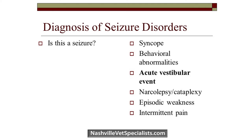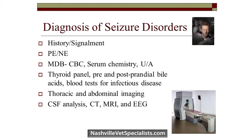When working up a patient with a seizure, at minimum a physical and neurological exam should be performed, along with a minimum database for first-time seizure patients: CBC, chemistry, and urinalysis. Depending on signalment, a thyroid panel, bile acids, and infectious disease titers may be needed. Thyroid testing is done not to identify a seizure cause — thyroid disease itself doesn't cause seizures — but because certain medications can affect thyroid testing and you want to know about other systemic issues before starting medication.